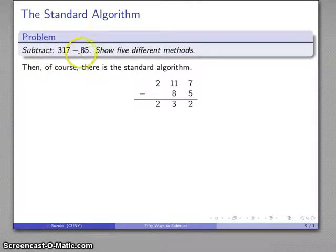But my inclination for a problem like this, if I were confronted with a problem like this, I would probably either do some variation of decomposition 317 minus 80 minus 5, or possibly I might do something like counting past 317 minus 100 is 217 plus 15 is 232.